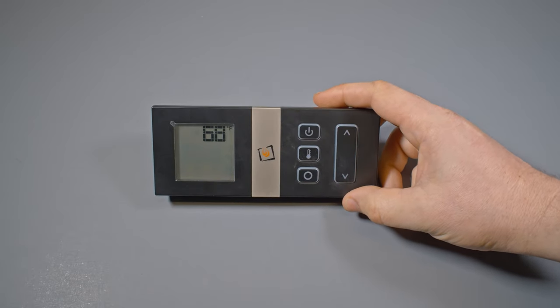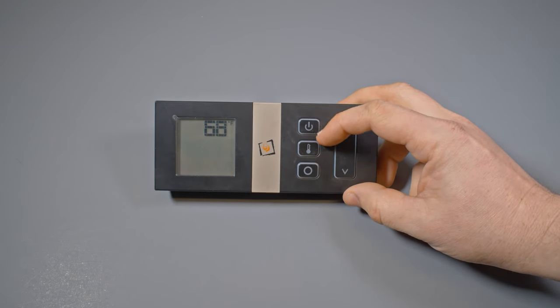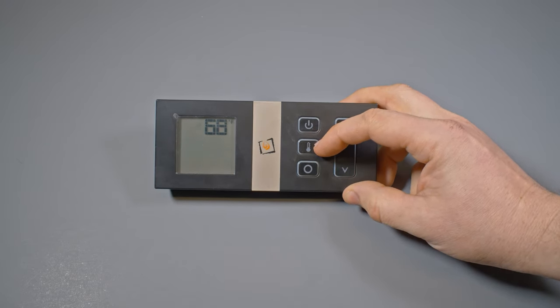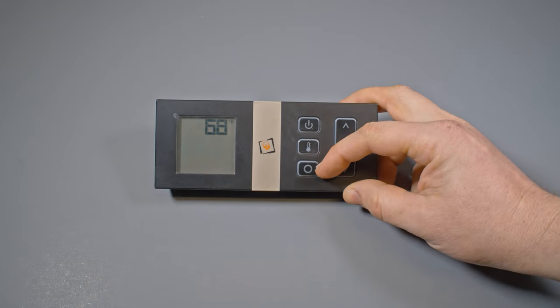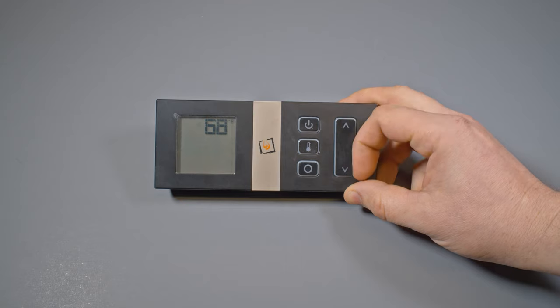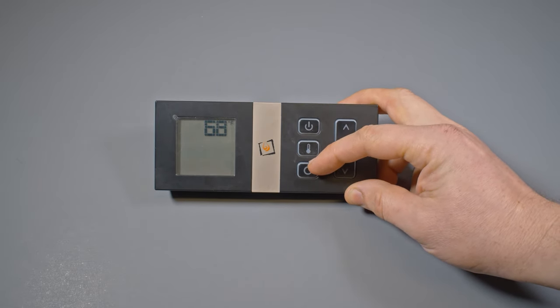We have five buttons in total on the front of this. The top most button here is the power button, and then we have a thermostat button, and the bottom button here is the mode button. The arrows are for toggling the operation of modes or the thermostat itself.